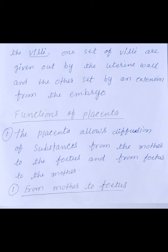The placenta is formed by two sets of minute finger-like processes called villi. Placenta में दो set होते हैं बहुत ही छोटे-छोटे finger-like processes जिसे villi कहते हैं. One set of villi are given out by the uterine wall, and the other set by an extension from the embryo. एक set villi का uterine wall से आएगा और दूसरा set embryo का extension होता है.